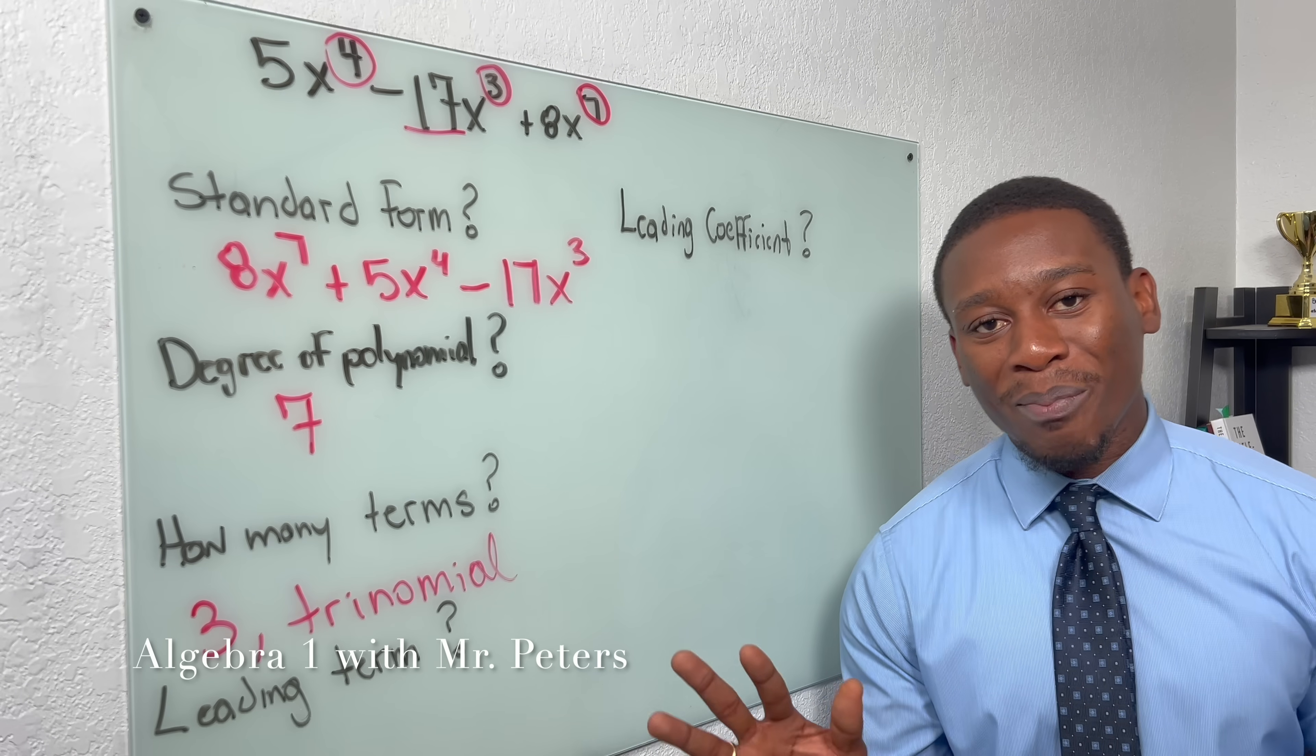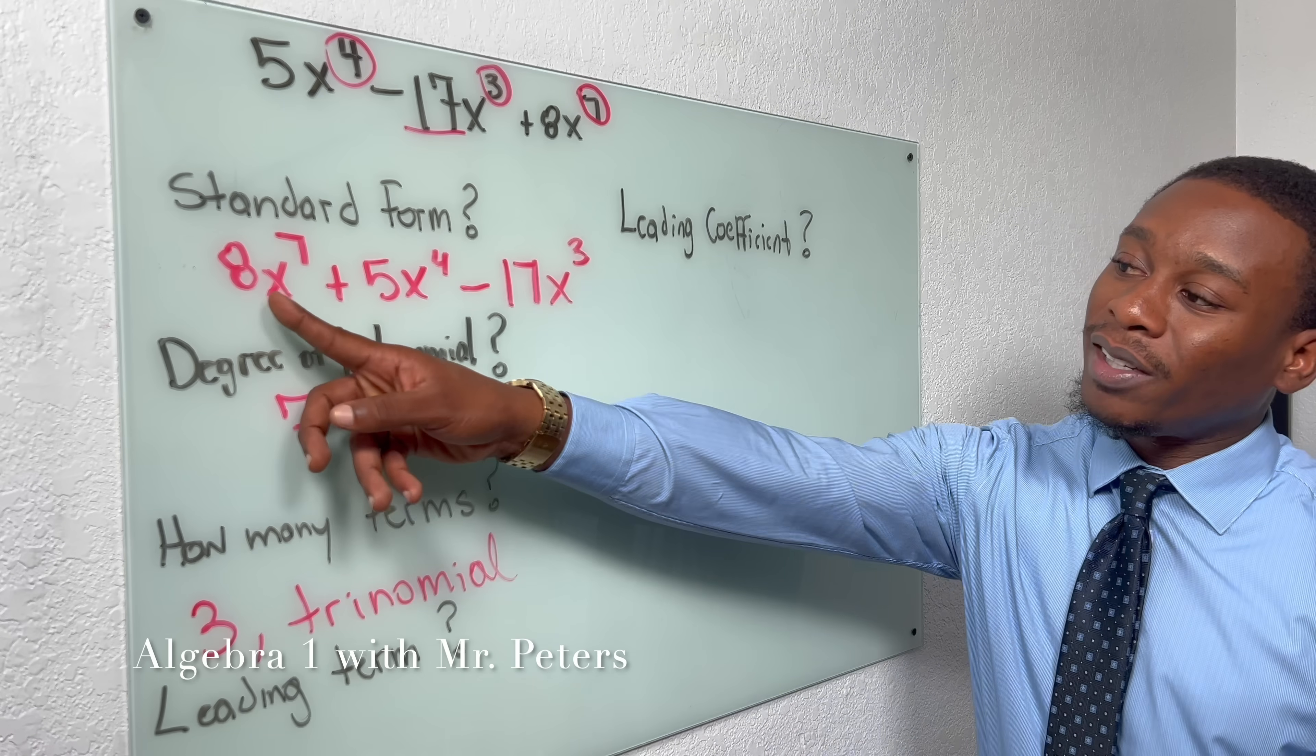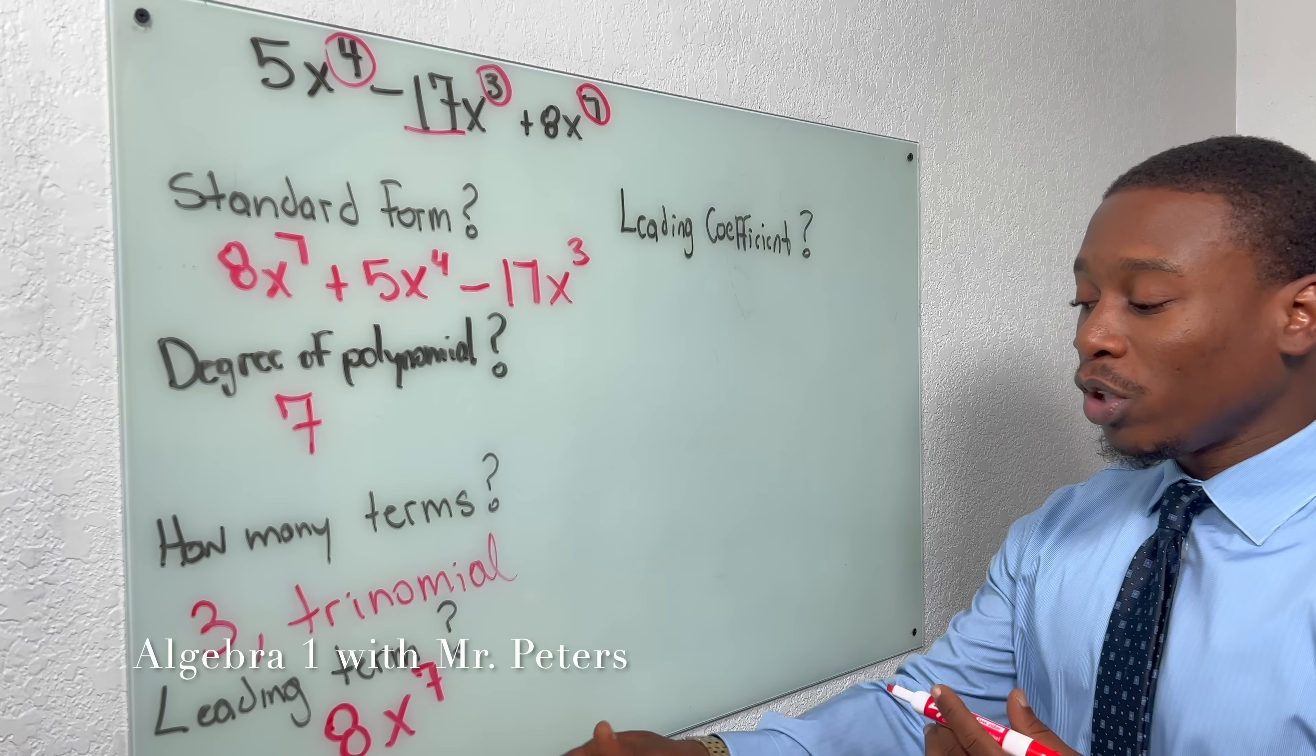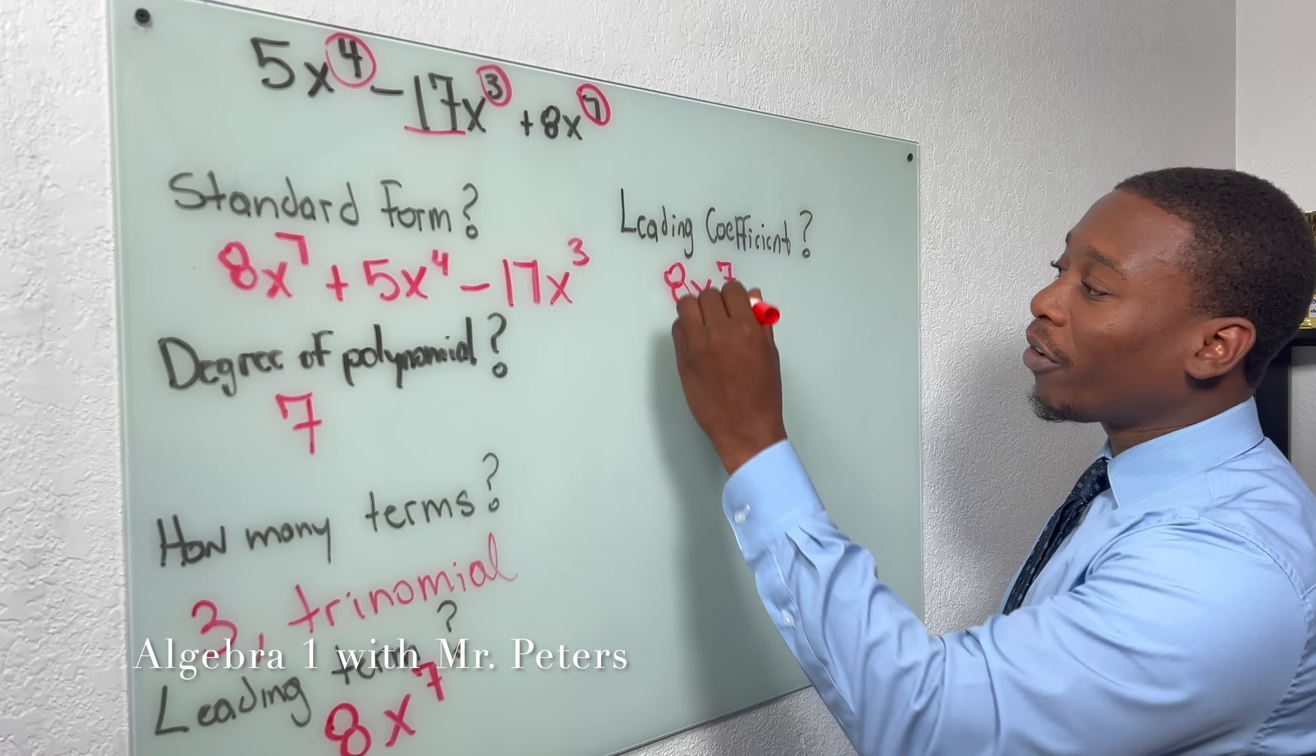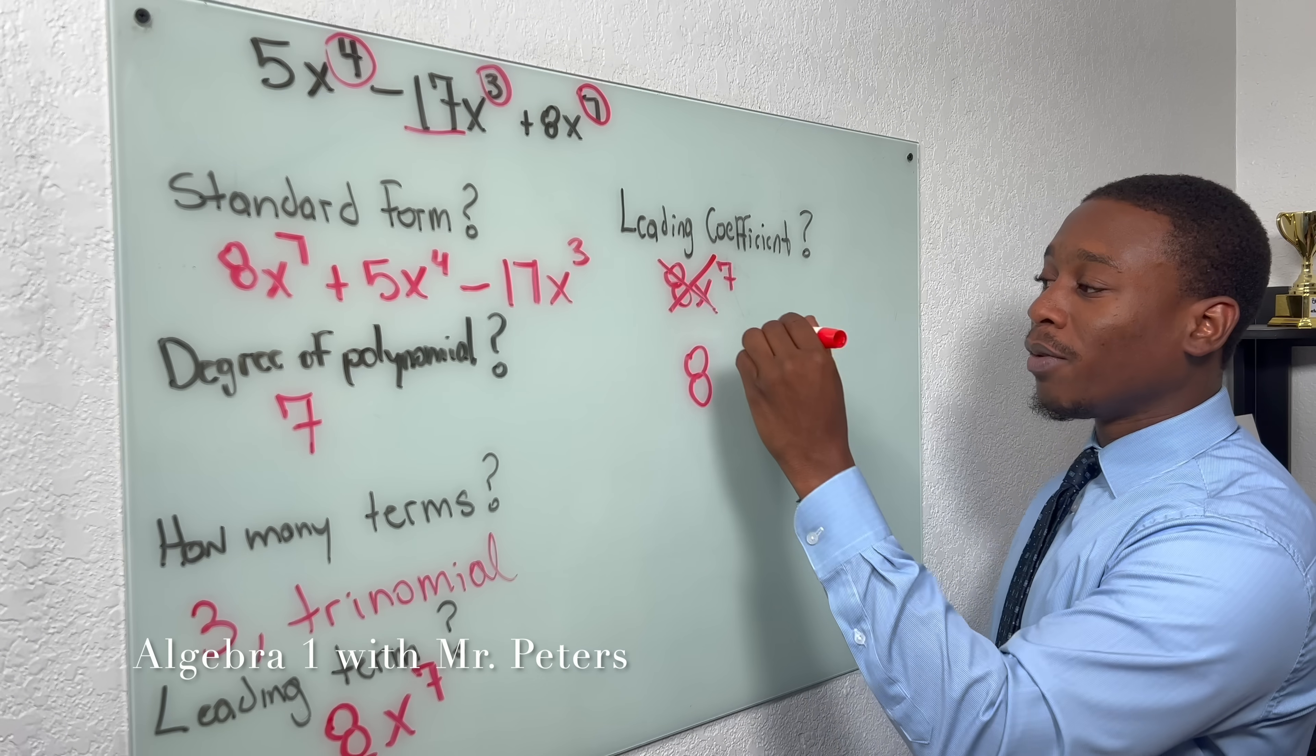Now, the bread and butter of classifying polynomials comes down to these last two questions. So the first one asks us, what is the leading term? So the leading term is just a term that has the highest exponent. And if you write it in standard form, you already know. So our leading term would be 8x^7. And the trick part is, students will then take this and rewrite it for the lead coefficient. But just remember that a coefficient is the number in front of the variable. So the leading coefficient is going to just be the number in front of the leading term. So our leading coefficient would be 8.